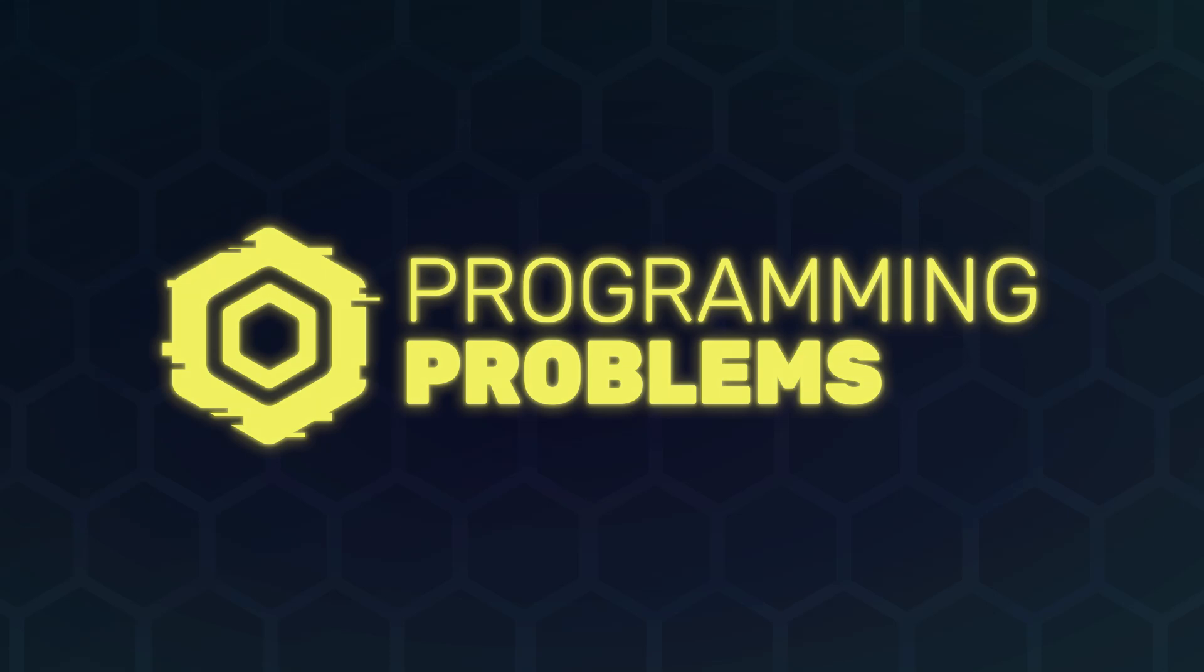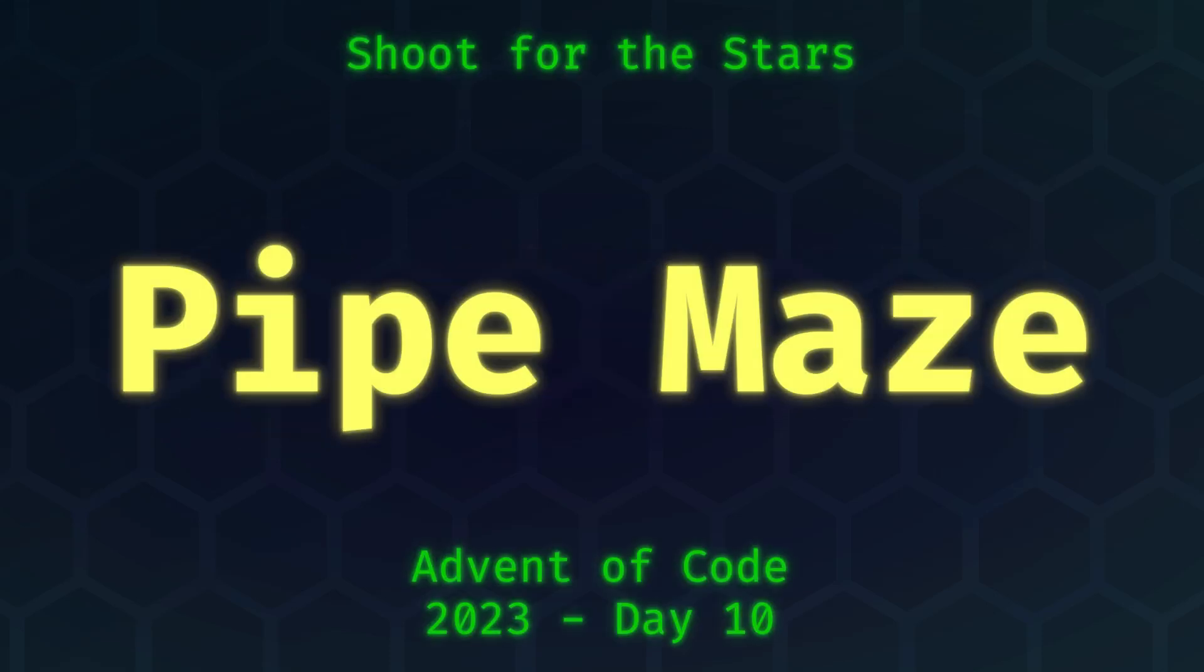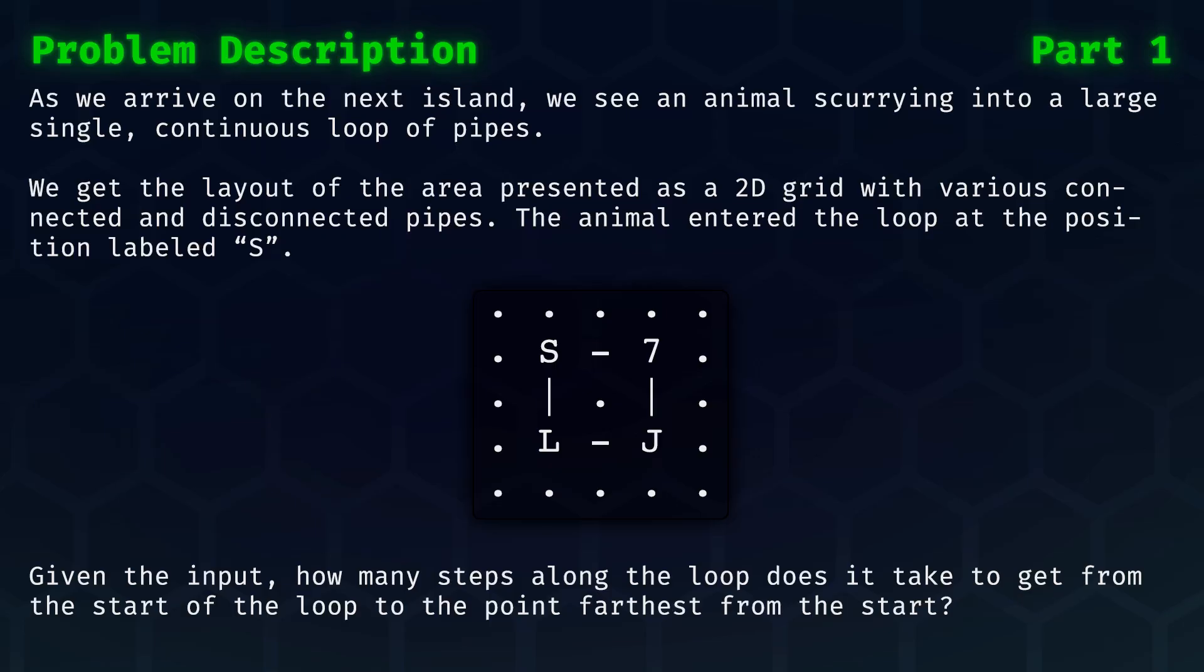Welcome to the 10th day of Advent of Code, where we are dealing with a pipe maze. As we arrive on the next island, we see an animal scurrying into a large, single, continuous loop of pipes.